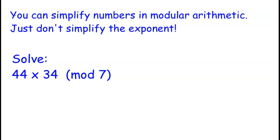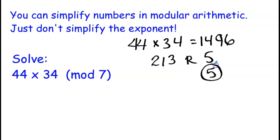So if I was asking you to solve this problem, 44 times 34 mod 7, you're allowed a calculator in this meet. So you could actually multiply 44 times 34 and get 1,496. You could divide that by 7 and you get that it goes in 213 times and it has a remainder of 5. So you would know that this answer is 5 mod 7.